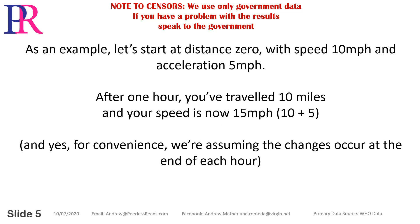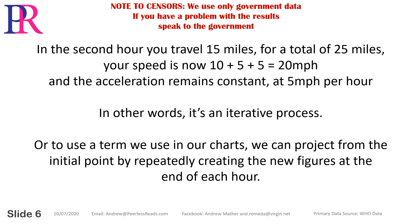As an example, let's start at distance 0 with speed 10mph and acceleration 5mph. After 1 hour you've travelled 10 miles and your speed is now 15mph — 10 plus 5. For convenience we're assuming changes occur at the end of each hour. In the second hour you travel 15 miles, for a total of 25 miles. Your speed is now 20mph.